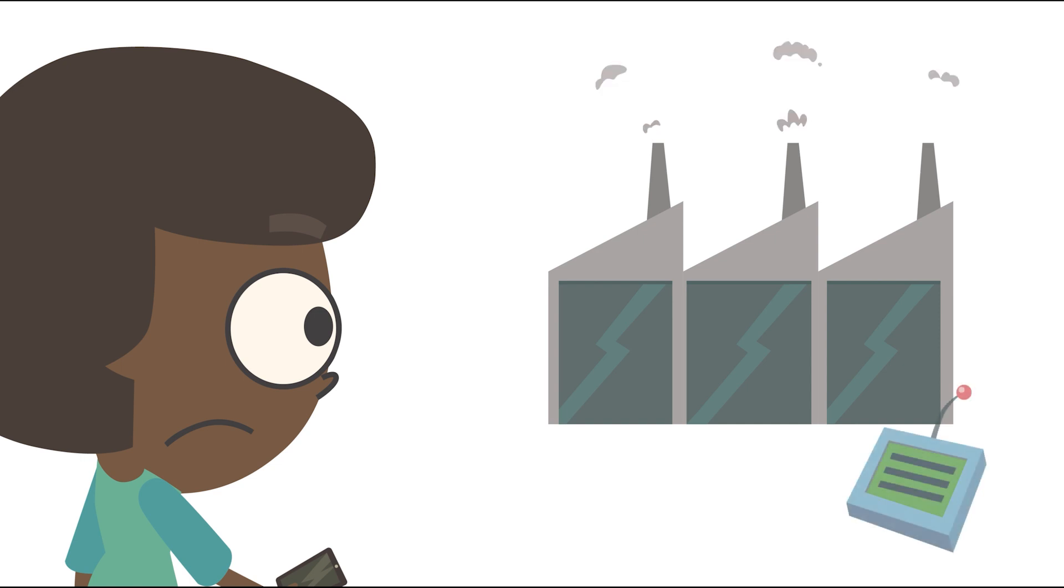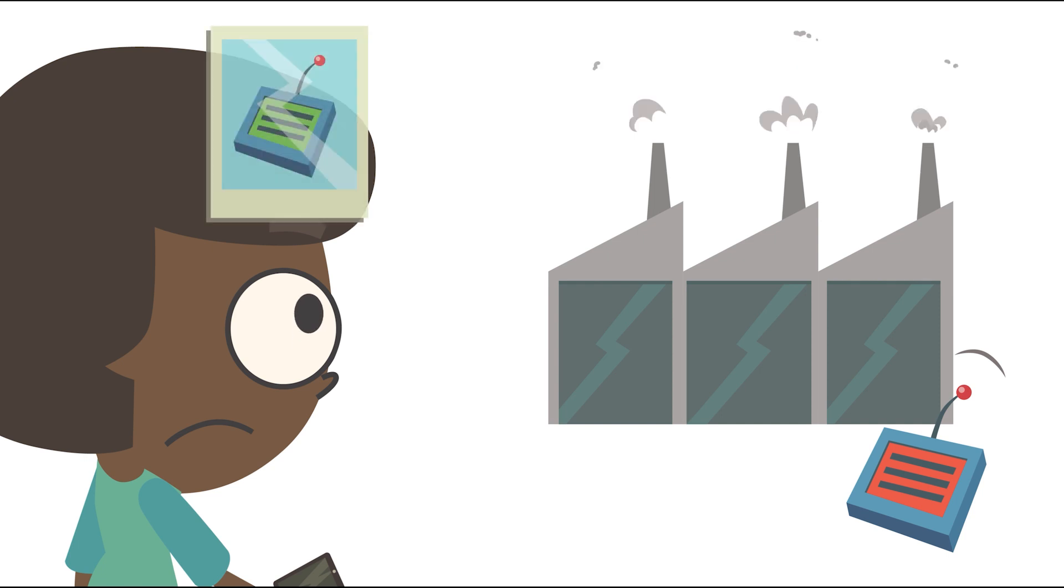For instance, cyclists and walkers could use air quality measurements in city centers to avoid locations where significant amounts of harmful gases are released into the air, therefore having healthier and more pleasant commutes or leisure strolls.